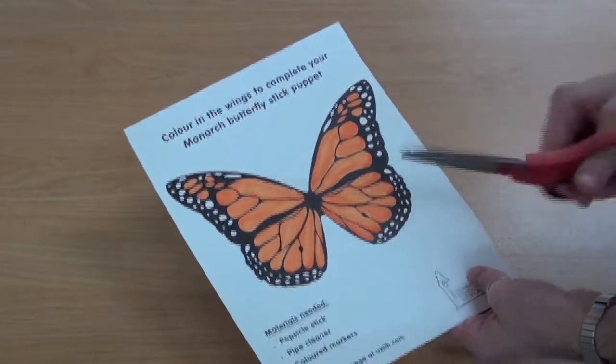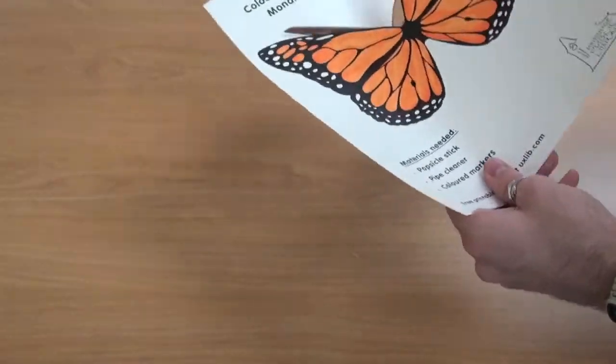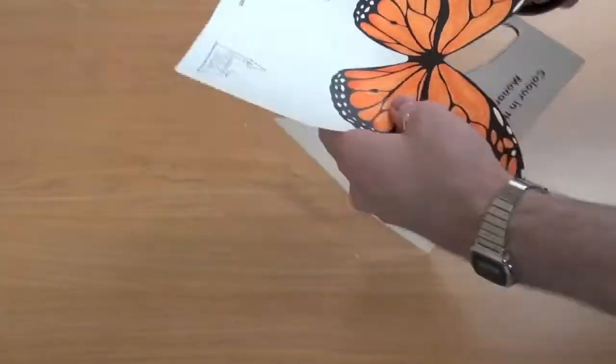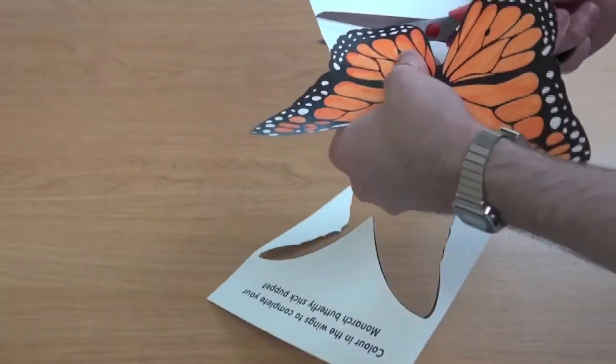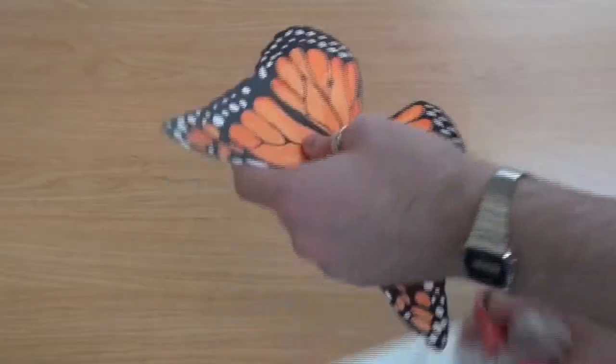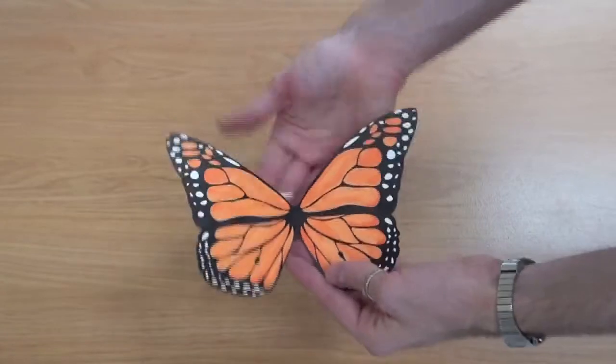Once you've fully colored it in, you can start cutting it out. Once it's done, it's ready for our popsicle stick.